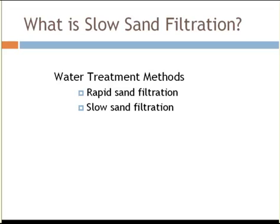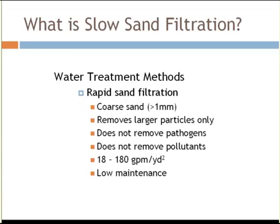Slow sand filters are commonly confused with rapid sand filtration systems. Rapid sand filtration systems are commonly used in agricultural operations, so I'll describe both systems so we can see where they differ. Rapid sand filters use a coarse sand matrix — typically the sand grains are greater than a millimeter in diameter. Because of that coarseness, they're only able to remove large particulates suspended in the water. They don't remove pathogens, and they don't remove pollutants that are dissolved in water.